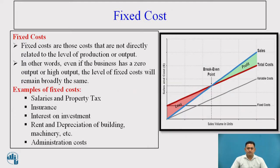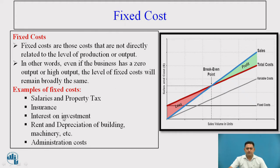Now let us see the fixed costs. Fixed costs are those that are not directly related to the level of production or output. In other words, even if the business has zero output or no production, fixed costs are still running and must be paid compulsorily. Examples include salaries, property tax, insurance, interest on investment, rent or depreciation of building and machineries, and administration cost.